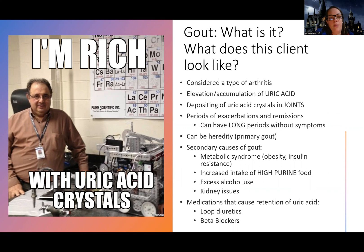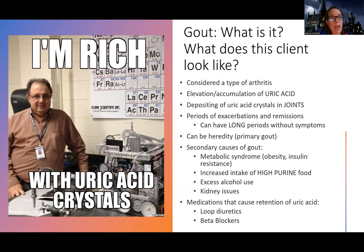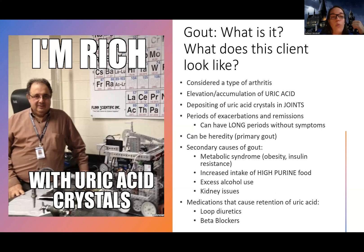What's happening here is sometimes because of a hereditary issue — we have primary gout where it's genetic — or sometimes because of things like metabolic syndrome, high intake of things that could lead to uric acid accumulation, things like organ meats and alcohol are big things. We'll talk more about high purine foods. Or your kidneys could not be working right, or medications you're taking can cause you to hold on to more. So think of it this way: either because of genetics, your kidneys aren't working, or because of what you're taking in, you're either taking in too much uric acid or your body cannot get rid of it.